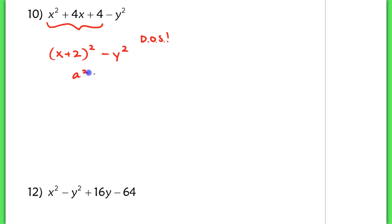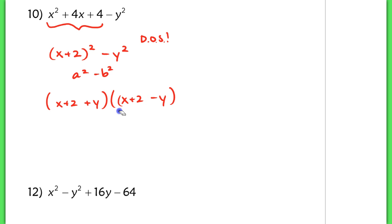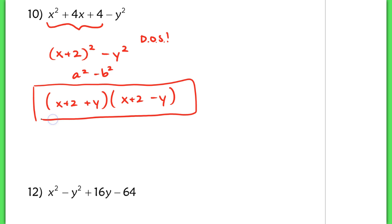Think of this as a squared minus b squared — the a is just a little bit more complex, but it should factor into the quantity x plus 2 plus y, and the quantity x plus 2 minus y. There's no simplifying here since I don't have any like terms, and that would be my final answer for factoring number 10.